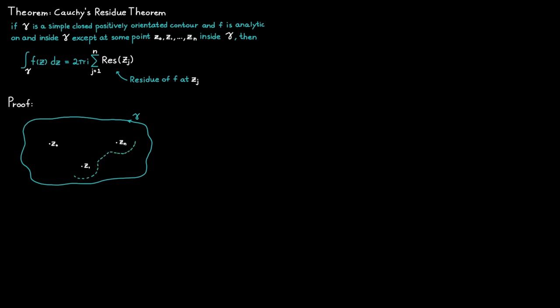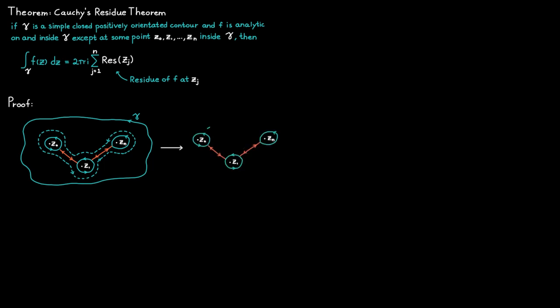The next thing we are going to do is continuously deform our contour gamma. The key things I want to do with our new contour are to isolate the isolated singularities with a circle each, and then have a line that goes up and down from these circles. This new contour can be broken up into smaller parts: gamma 0, gamma 1, gamma n for the circles, and then two pairs of lines going between the circles. Notice that the only difference between the lines in each pair is the orientation.